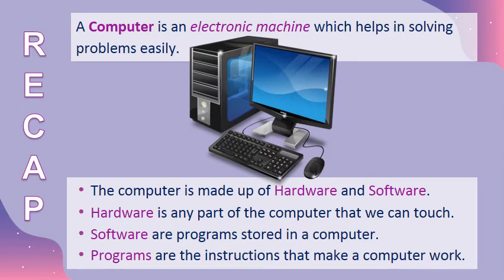Let's have a quick recap about the things that we learned in earlier classes. A computer is an electronic machine that can do many things easily and accurately. It is made up of two components: hardware and software.